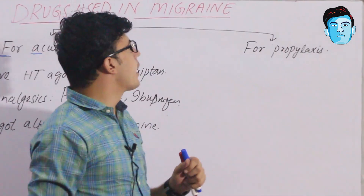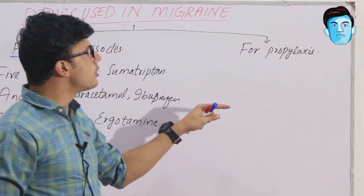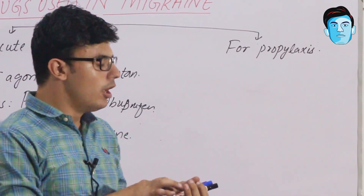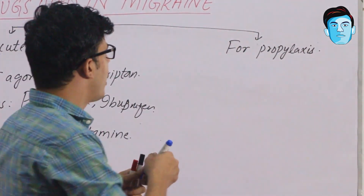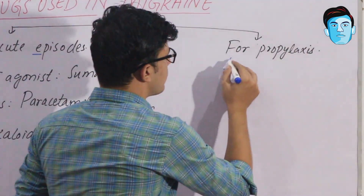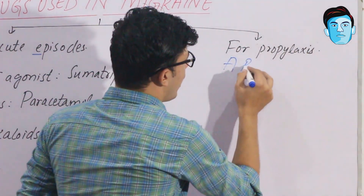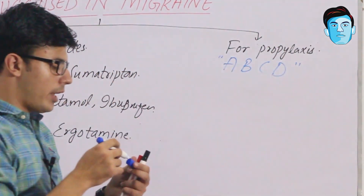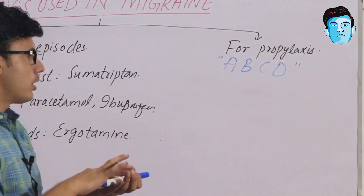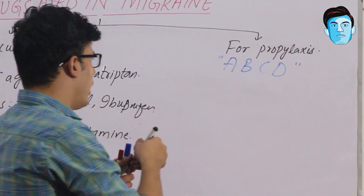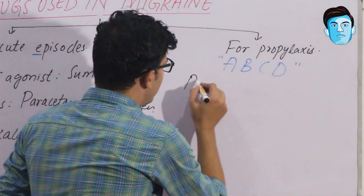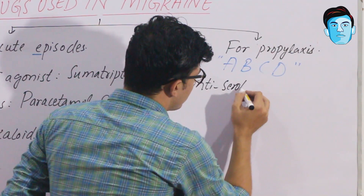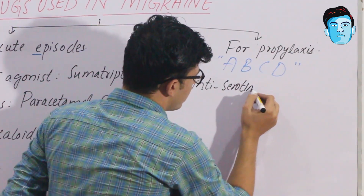There are certain drugs that are preferred for the prophylaxis of migraine. For that we have a mnemonic: A, B, C, and D. Where A stands for anti-serotonergic drugs.